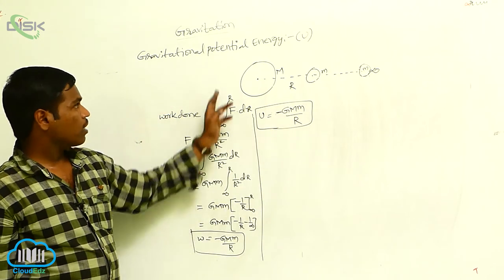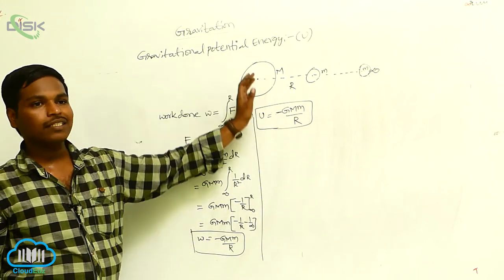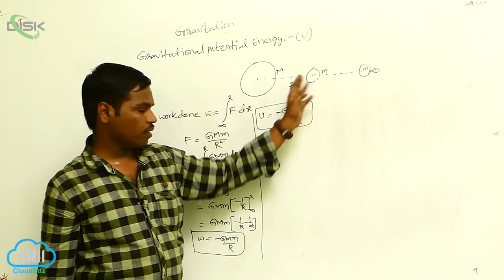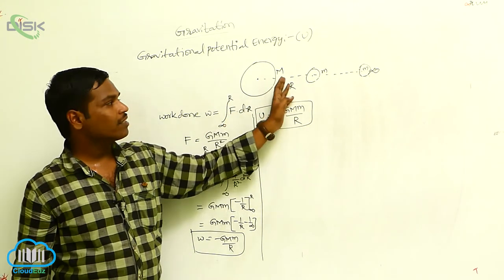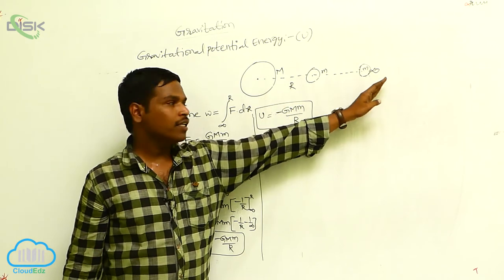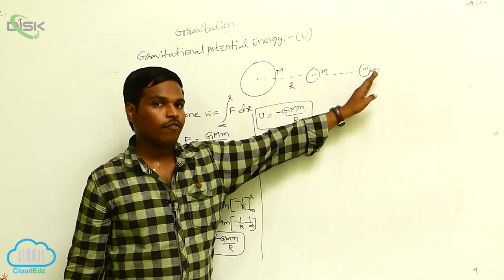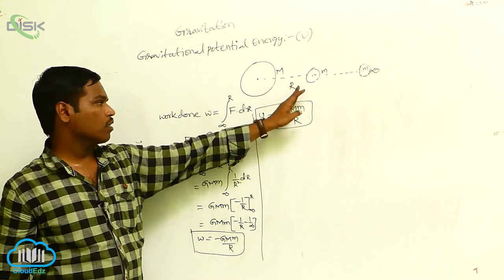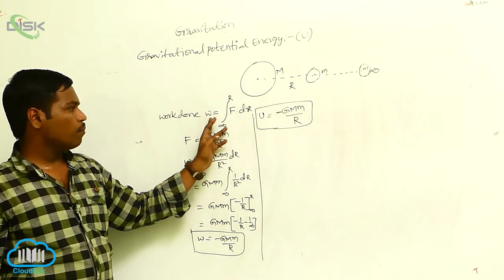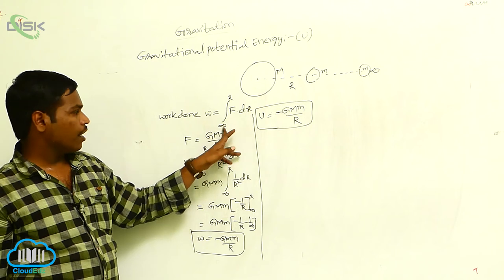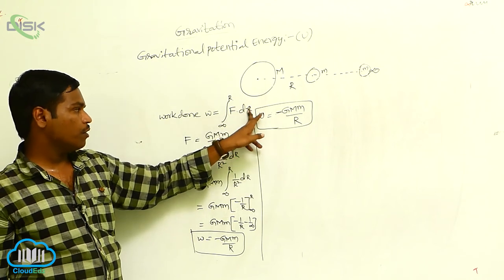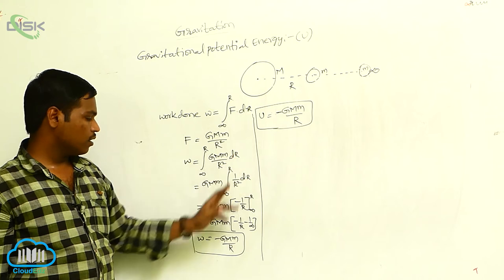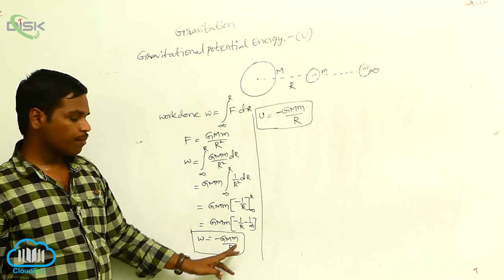Gravitational potential energy is the work done in bringing small m mass from infinite distance to the distance capital R. That is W = ∫(from infinity to R) F·dR = ∫GMm/R² dR, which gives −GMm/R.